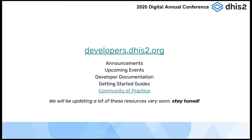We have a great resource for all your application development needs at developers.dhis2.org — lots of announcements, upcoming events such as the Academy hosted in June and August 2020, as well as documentation, guides, and learning materials. You can view recordings and slides from all past sessions and academies. There's also a link to a community of practice category specifically for application development where you can post questions, feature requests, or use cases.